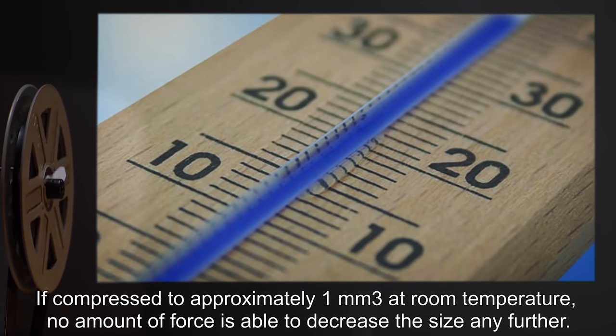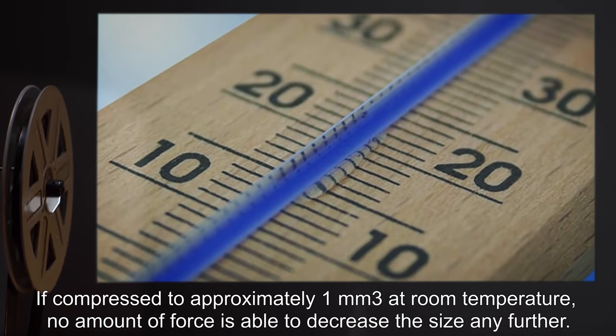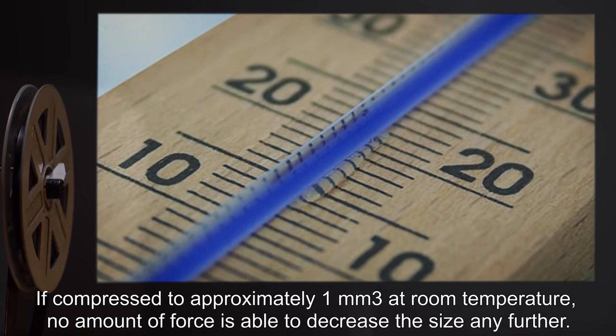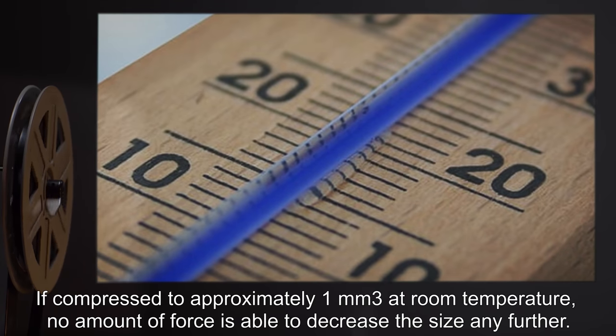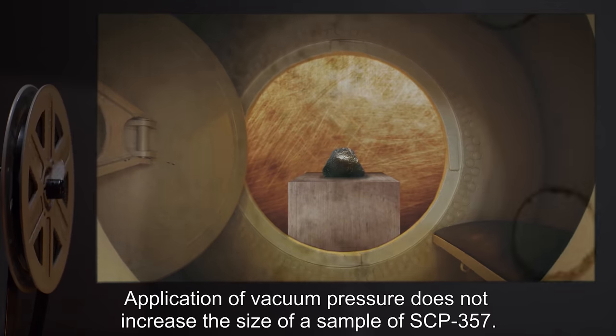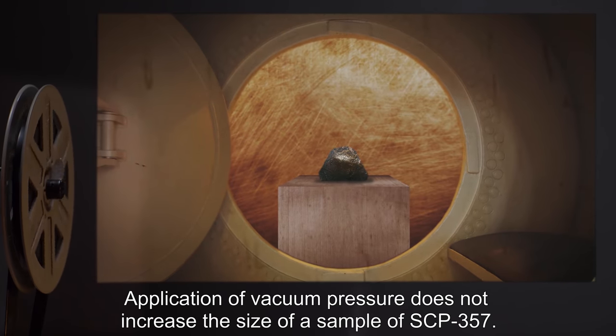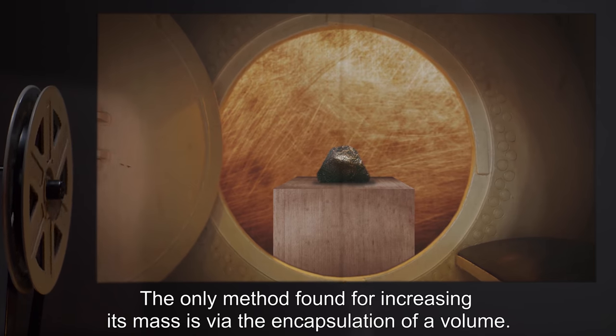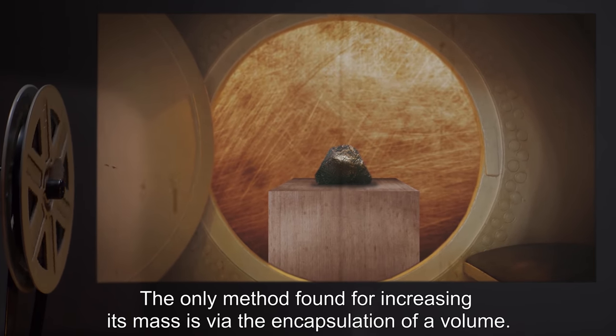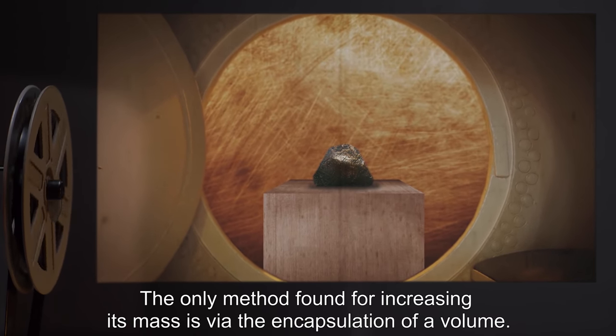If compressed to approximately 1 millimeter cubed at room temperature, no amount of force is able to decrease the size any further. Application of vacuum pressure does not increase the size of a sample of SCP-357. The only method found for increasing its mass is via the encapsulation of a volume.